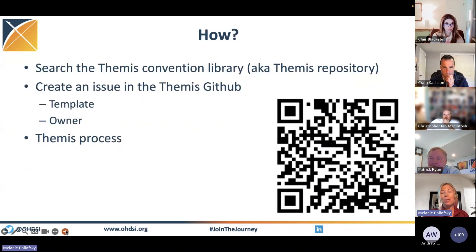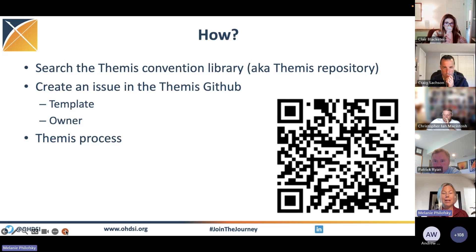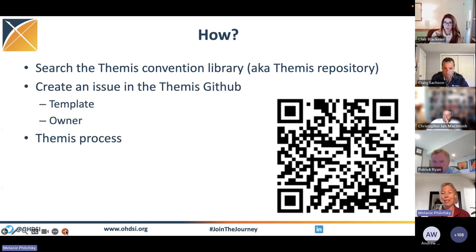So how do we do this? Themis working group: first, if you have a question about how data should be inserted, search through the convention library to see if there's a convention there already. If there's not a convention there already, then create an issue in the Themis GitHub. We have a template for you, and you become the owner of that issue, taking it through the whole Themis process.